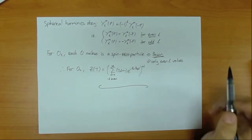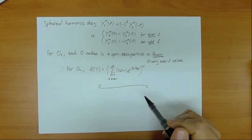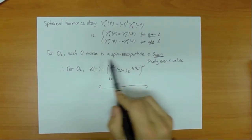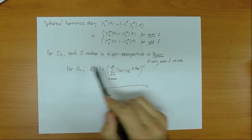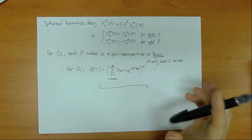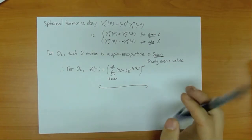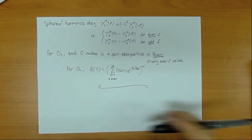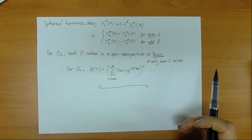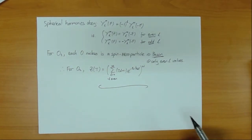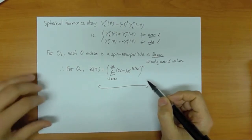For oxygen this description is complete, but for other nuclei it's a bit more complicated, because if the nucleus has non-zero spin then in the wave function for the diatomic molecule we have to consider not only the spatial part for the nuclei but also their spin functions, which introduces an extra complication.